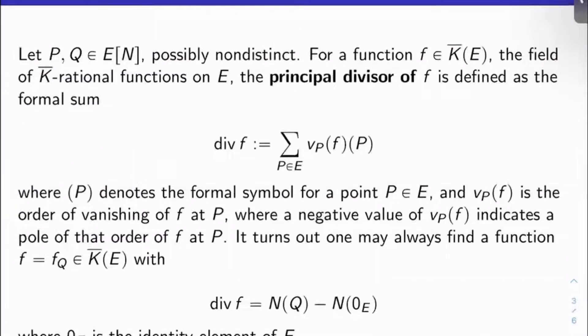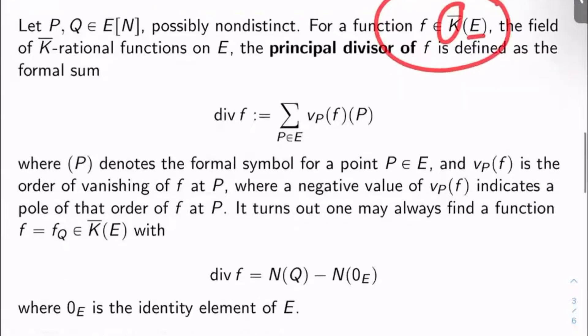So I'll break this into two slides. What you do, you take two N torsion points for E. Let's call them P and Q. They don't have to be different. They can be non-distinct. Let's take a function f in the field of K̄ rational functions on E. So this is like the rational functions on E that have K̄ coefficients.